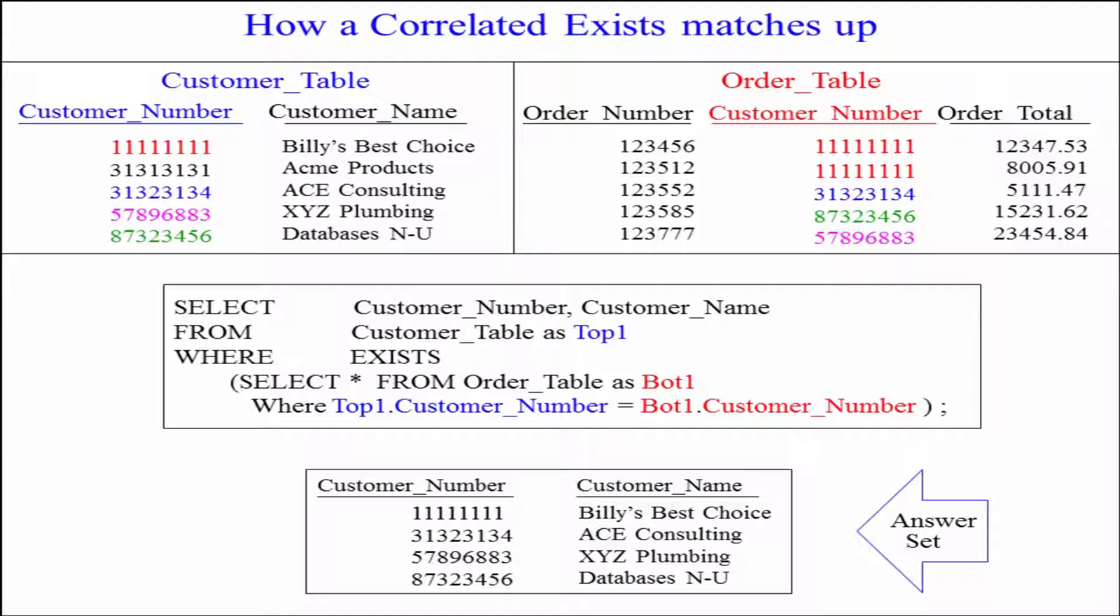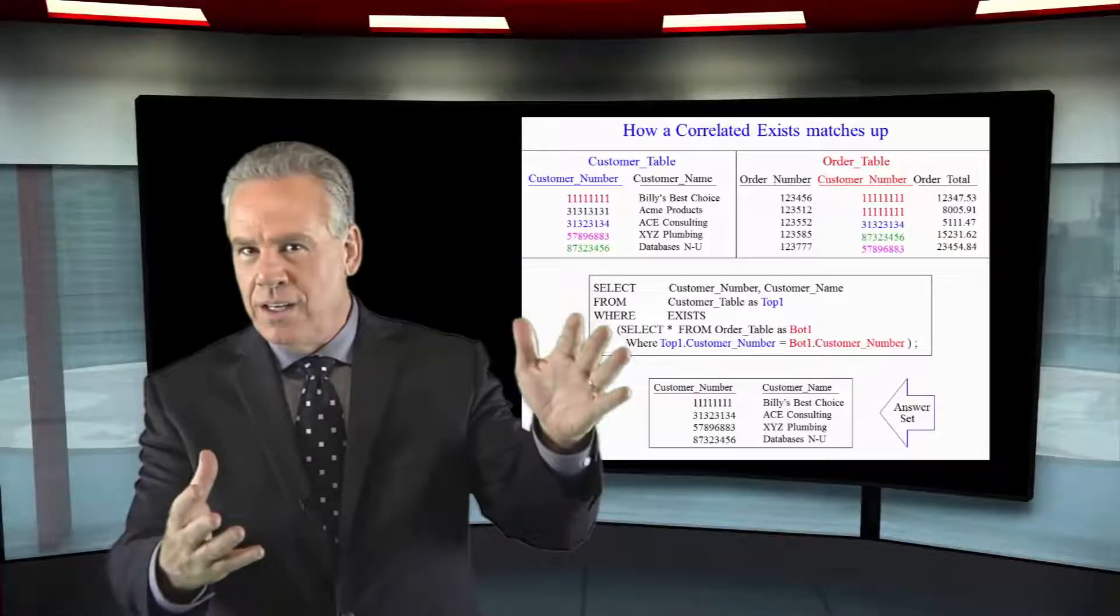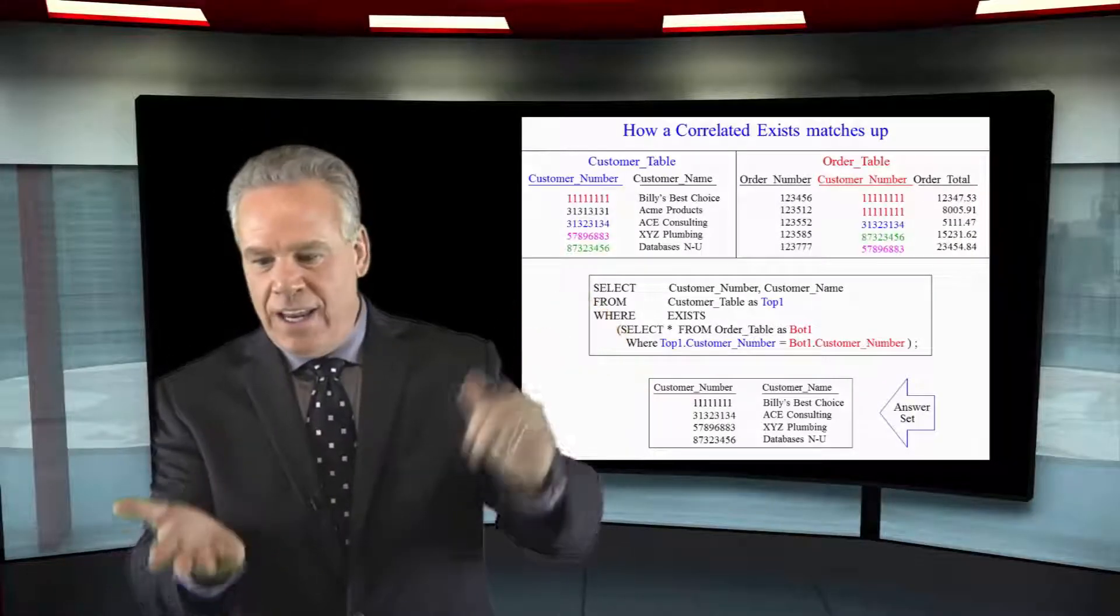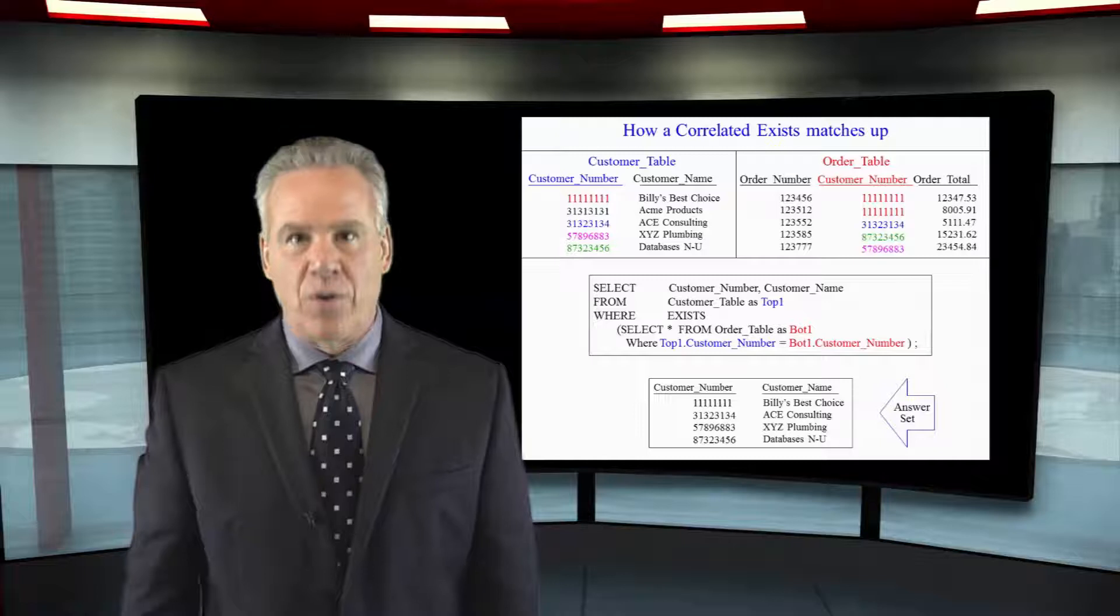It doesn't matter. If there is an exists, it's a boolean. It either did happen or it didn't. They either did place an order or they didn't. And if they find any positive, they return the row.